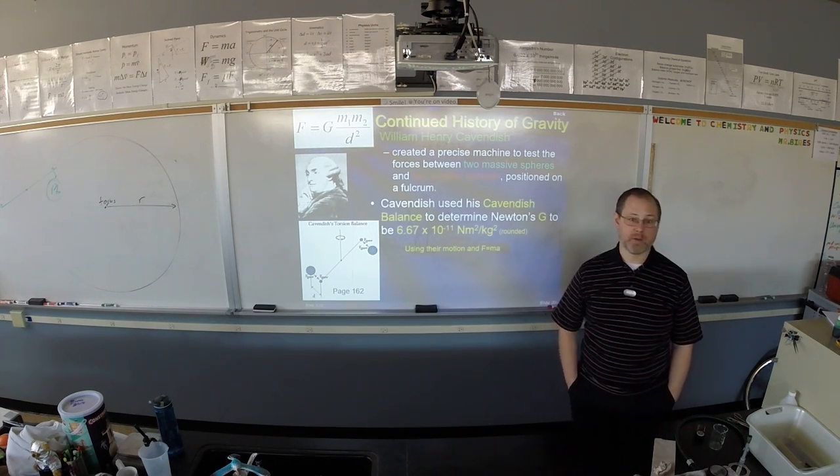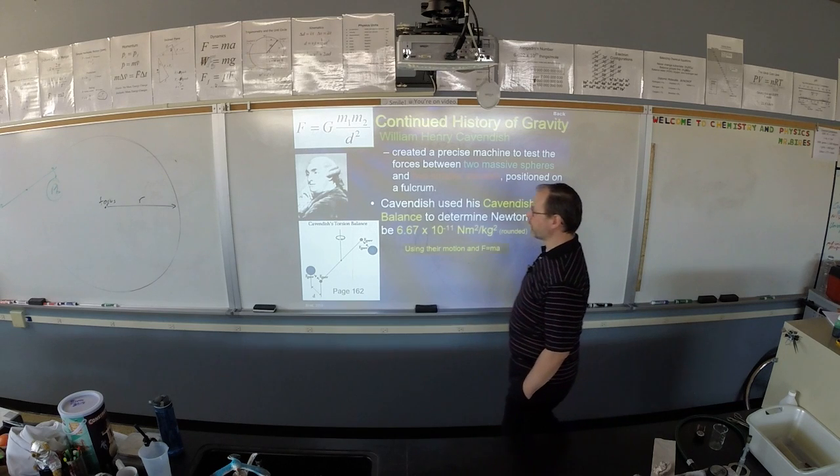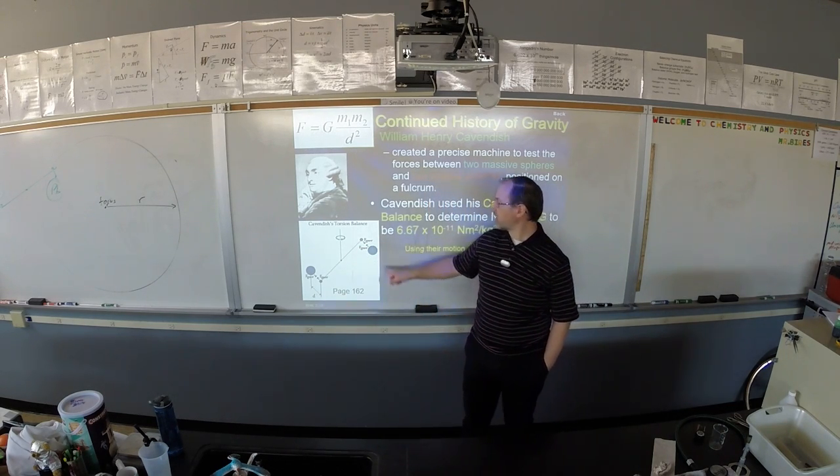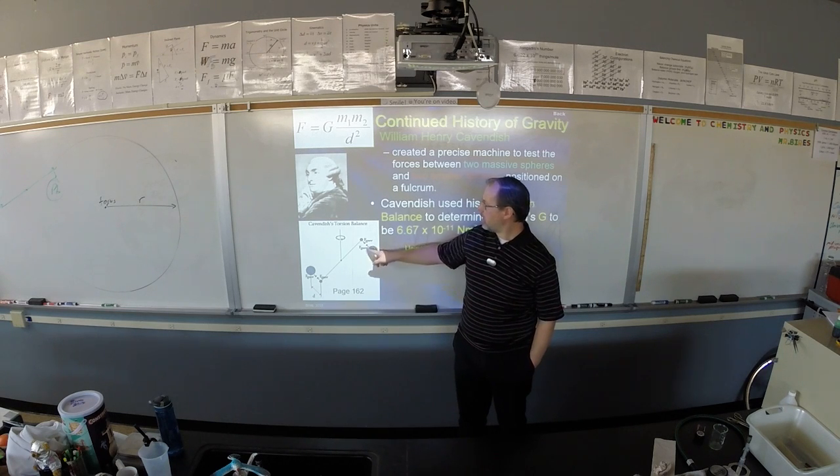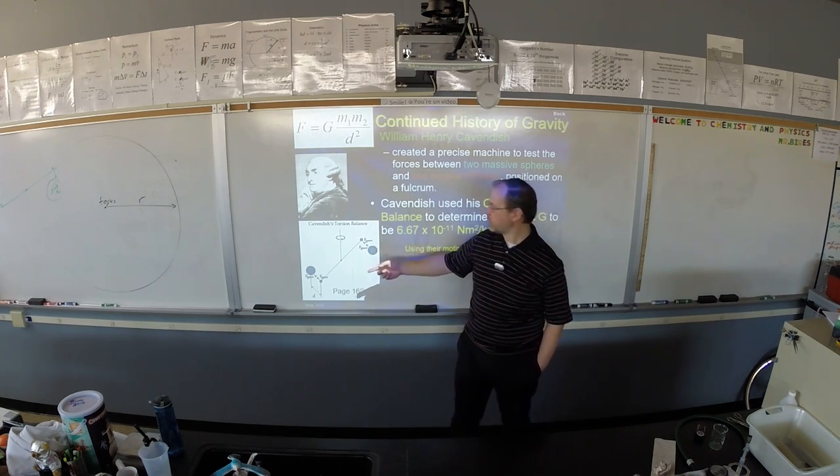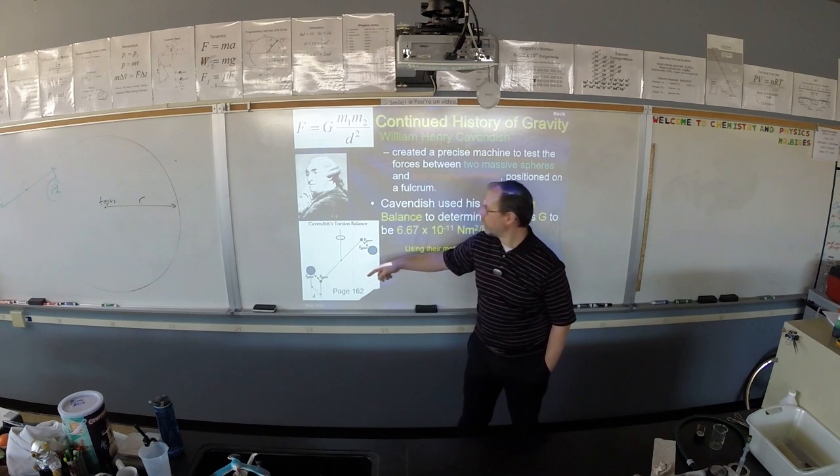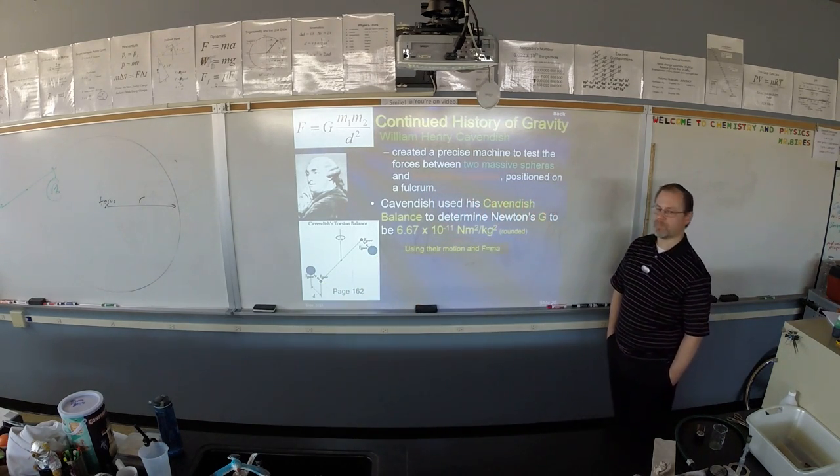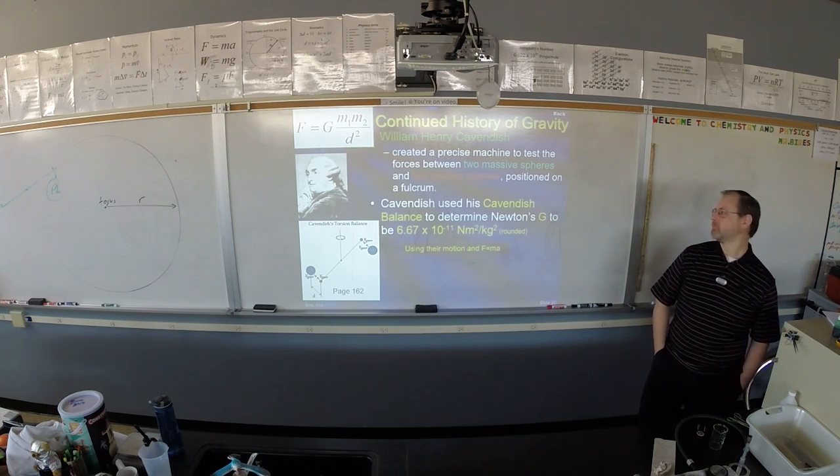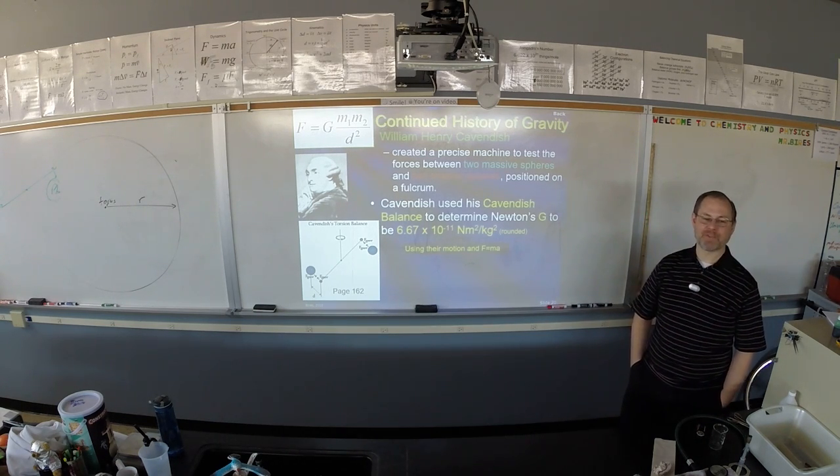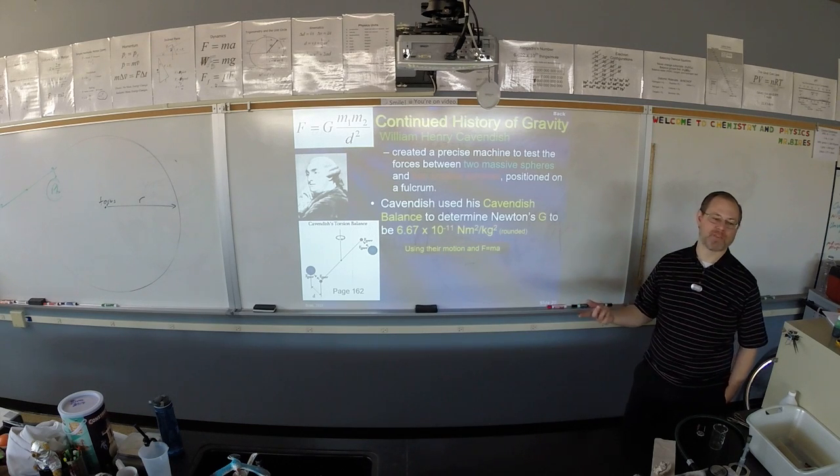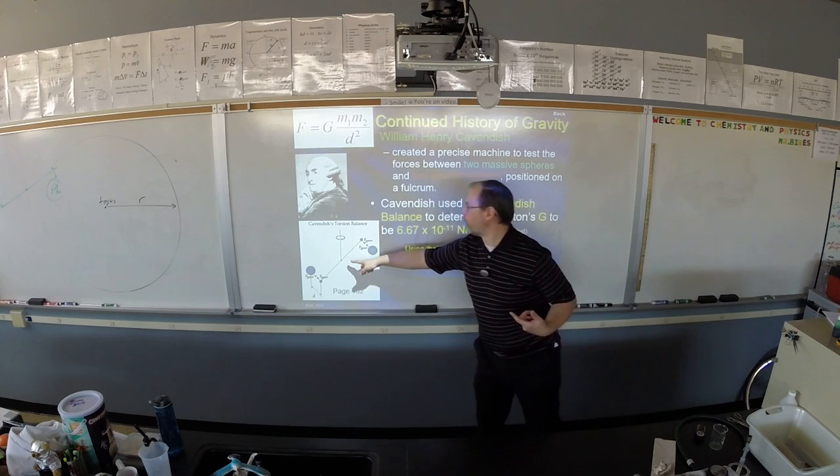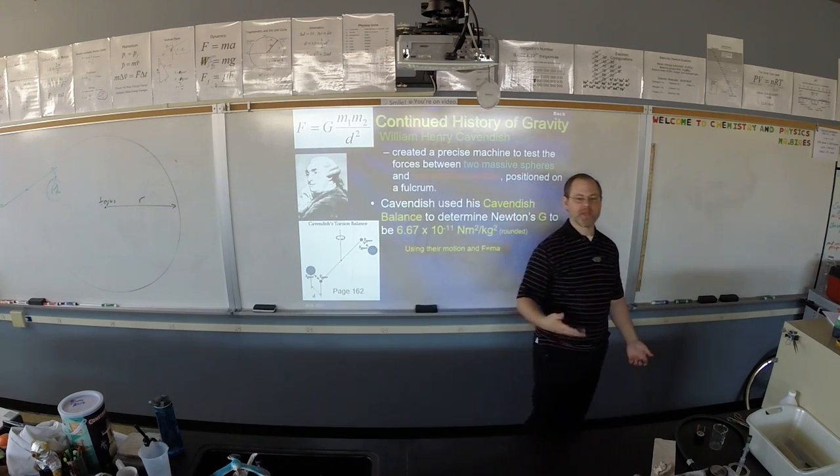This is something you could do if you want. I mean, all you need is two massive things and a swinging bar. I would recommend like a big block, like a boulder, and then maybe your mom. Something massive on both ends. You can try your mom. Something massive on. You have to have a lot of mass, because otherwise the acceleration will be so small that friction in the pivot will overcome it. It has to be big.